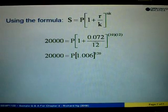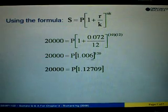Simplify the one in the bracket. So 0.072 divided by 12 is equals to 0.06 plus 1. So we will get 1.006 to the power of 120. Using your calculator to find 1.006 to the power of 120, we shall get 1.12709.